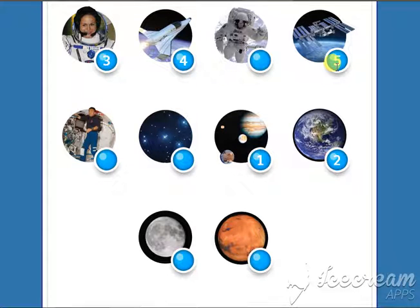Six. This is often called the red planet. Seven. We see this every night in the sky. It moves around Earth. Eight. We see these in the sky at night, but they aren't planets.